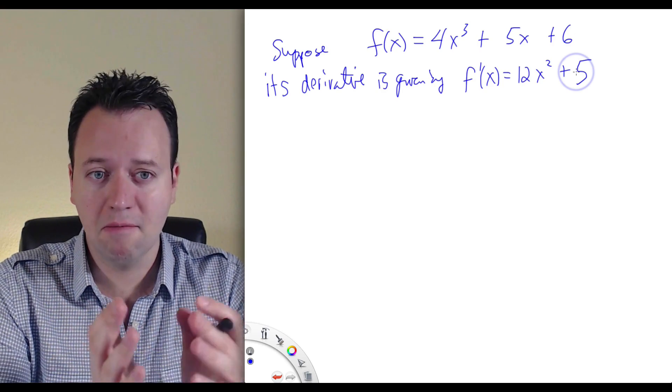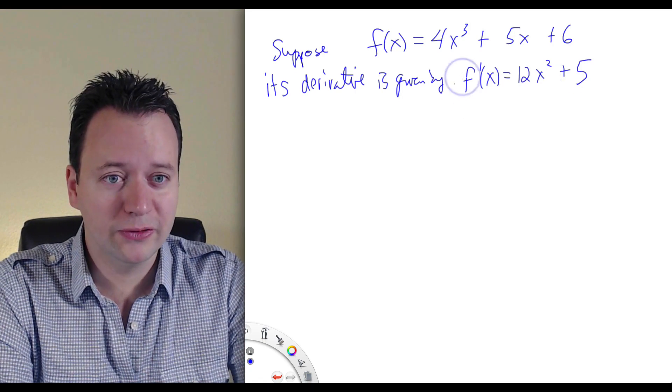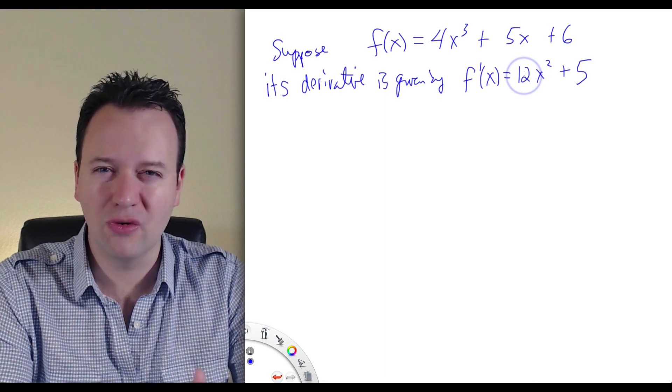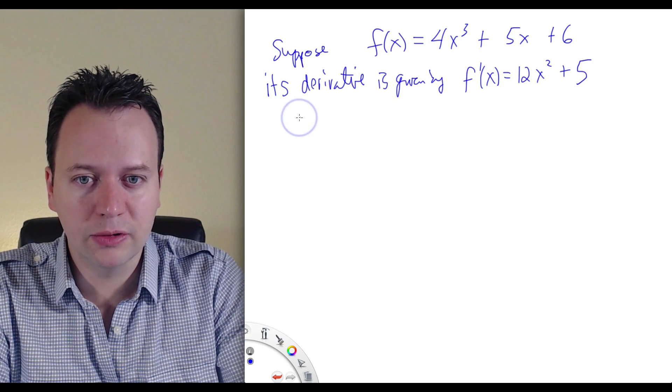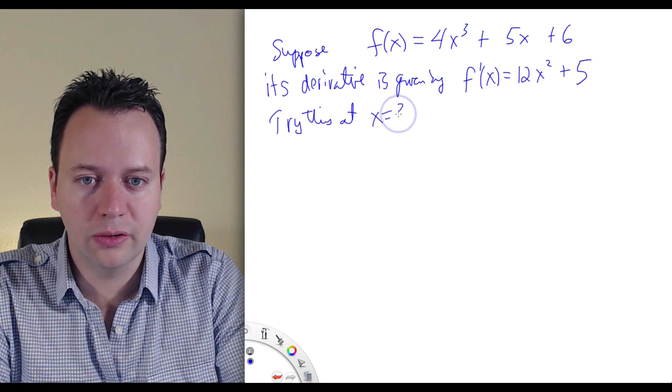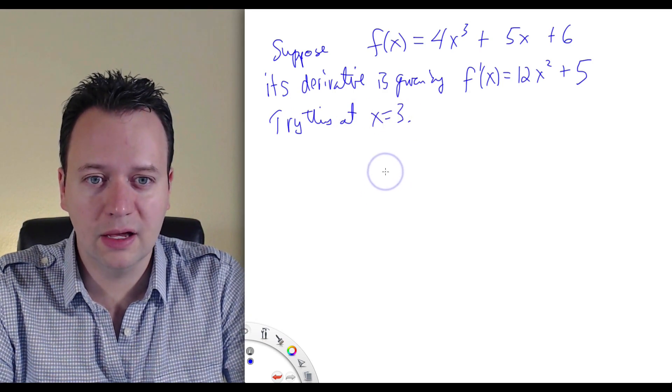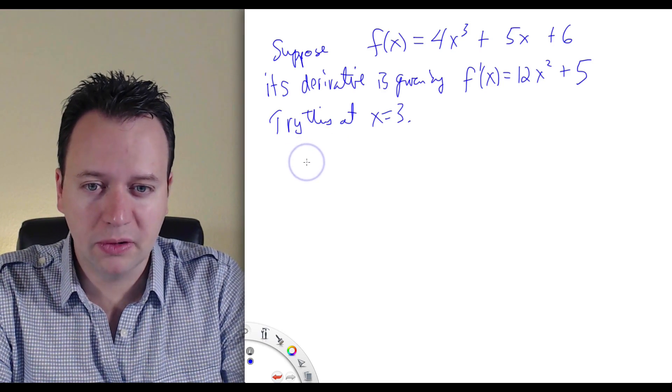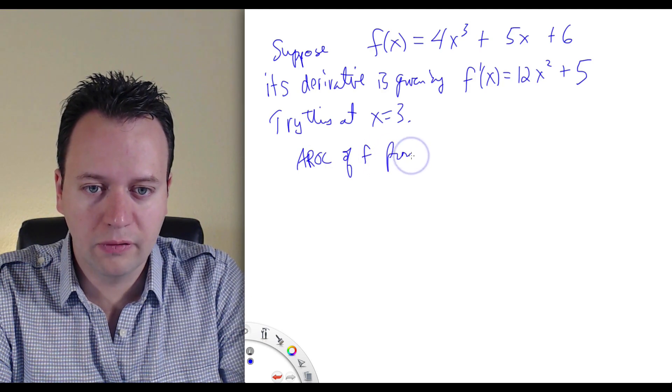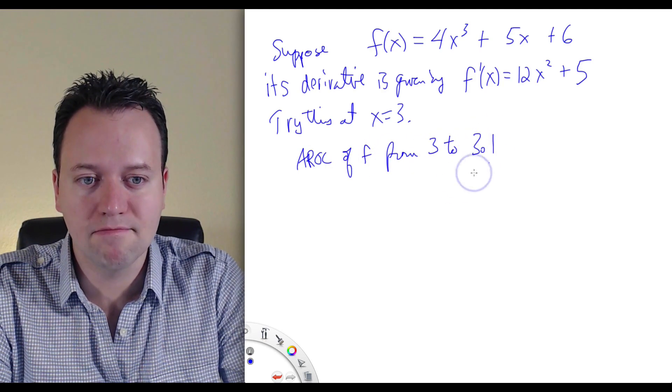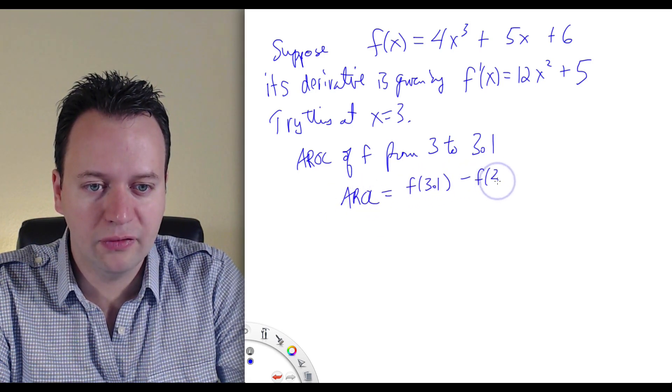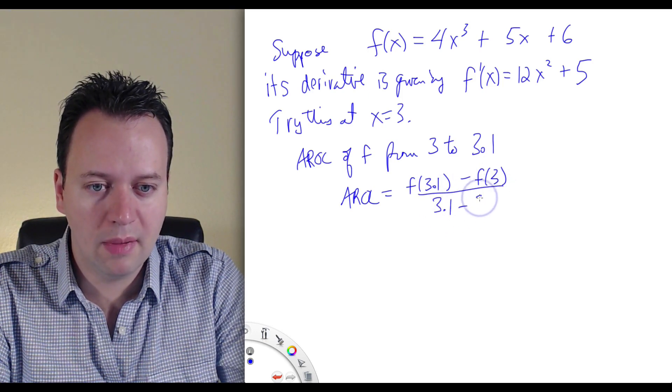Let's pick a random number. We've already used 4, 5, 6, and 12. How about at x equals 3? We'll keep it not too big because we've got x cubed. So let's try this at x equals 3. First, let's approximate the instantaneous rate of change. We could start by saying the average rate of change of f from 3 to 3.1. So that would be f(3.1) minus f(3) divided by 3.1 minus 3.